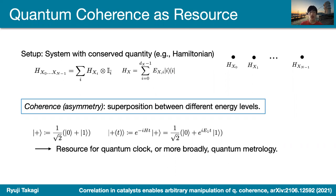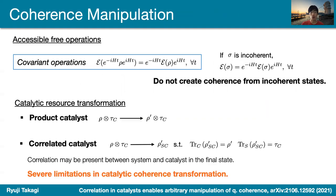This serves as an important resource — for instance as a quantum clock, because you can make a measurement on the state and infer the time from that. More generally, you can look at this as an important resource for quantum metrology. So we are now interested in what manipulations we can possibly do on this important quantum resource.